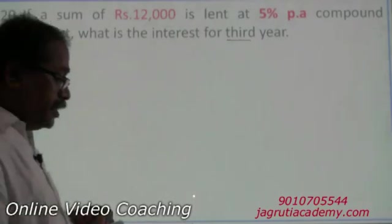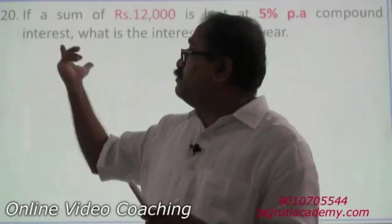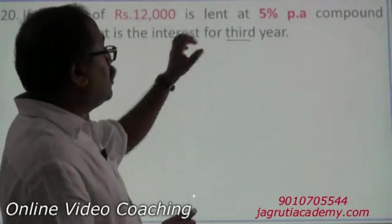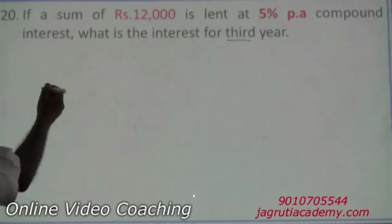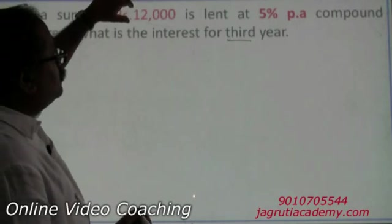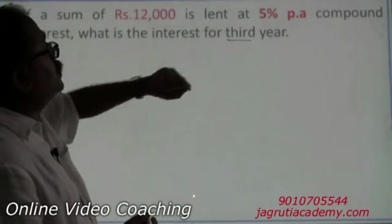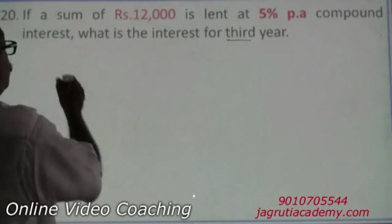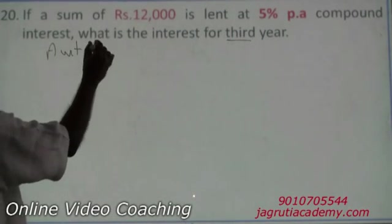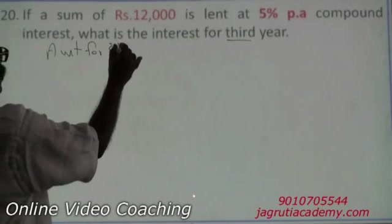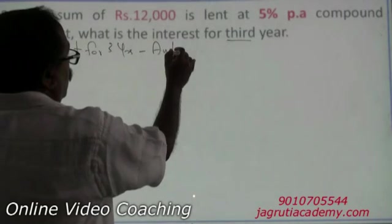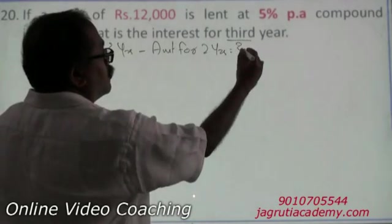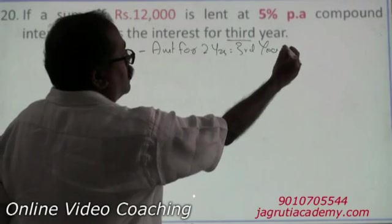For that, I will use both a formula approach and a general understanding of compound interest. The formula approach is: amount for three years minus amount for two years gives you the third year interest.